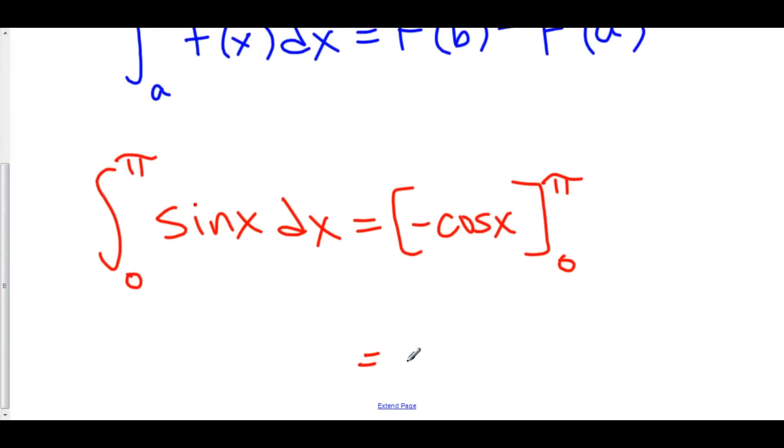So this is equal to negative cos of pi minus negative cos of zero.